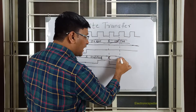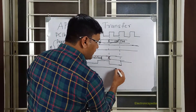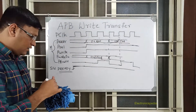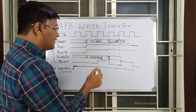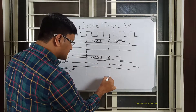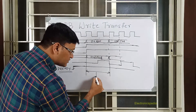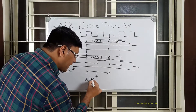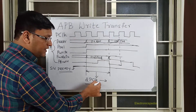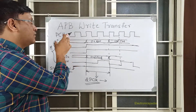The same protocol continues: with PSEL already asserted, PENABLE should be asserted again in the next clock cycle, and since PREADY is continuously asserted, it has to come down after each transaction. What we understand from this is: PSEL is asserted first, and PENABLE is de-asserted — that means for an APB transaction to take place, a minimum of two PCLK cycles is required. With two clock cycles you can complete an APB write transfer.